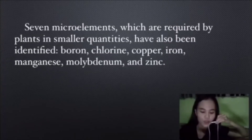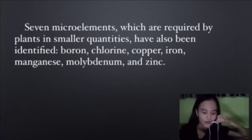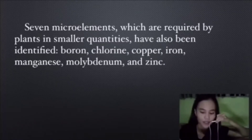Seven elements, which are required by plants in smaller quantities, have also been identified: boron, chlorine, copper, iron, manganese, molybdenum, and zinc.